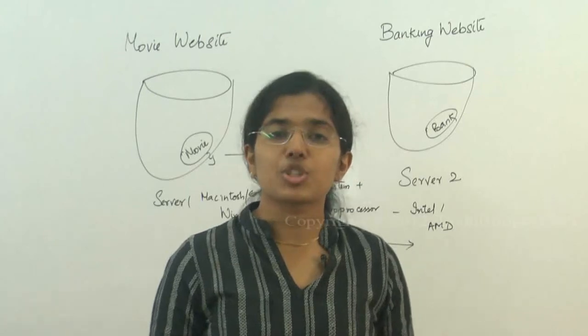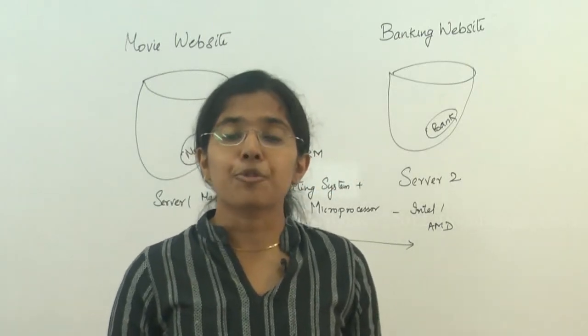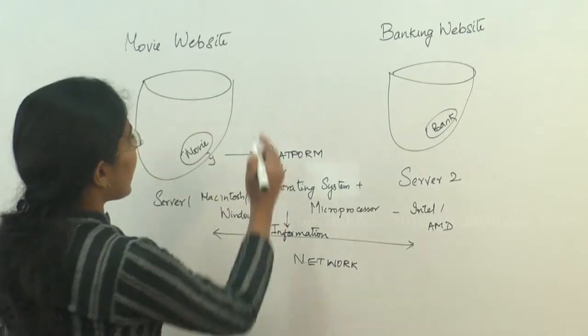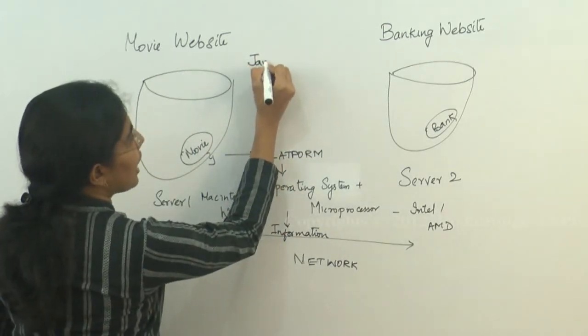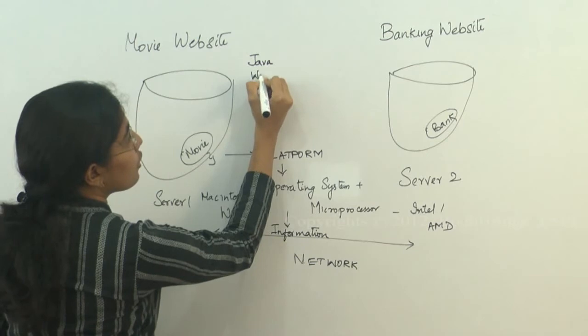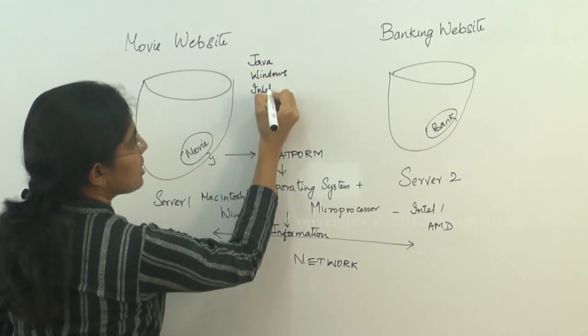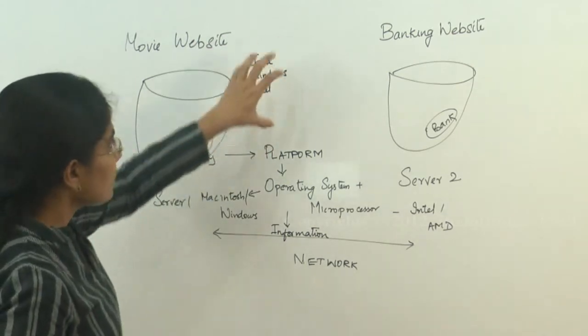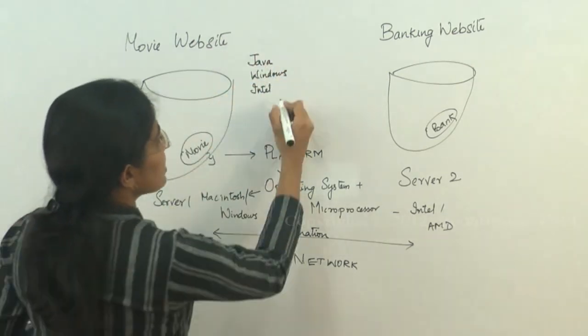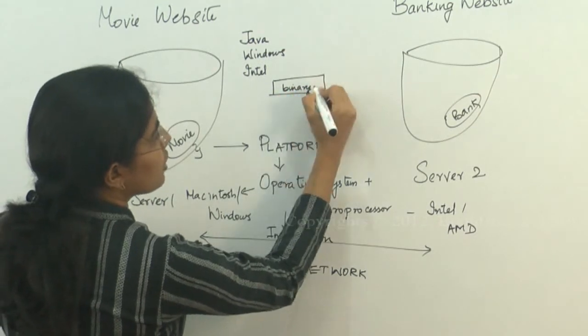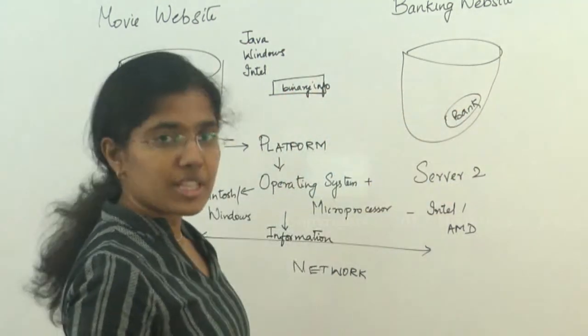One other challenge in programming language is platform independence. In Movie website, I can have the programming language as Java, I can have Windows operating system, and I can use Intel as my processor. So this will give me certain kind of binary information to be moved across the network to the banking website.